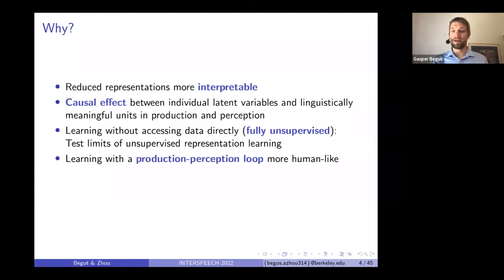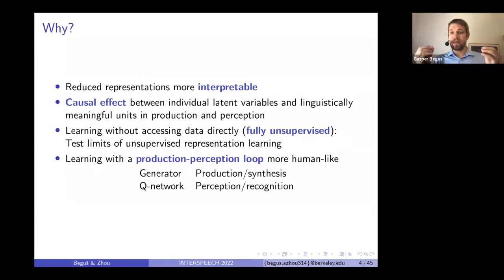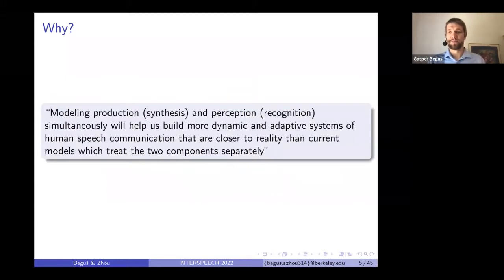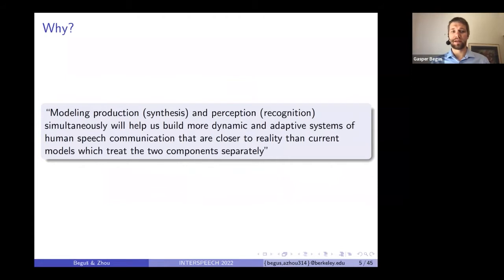We know that humans acquire speech by both perceiving it and also producing it. In fact, production and perception mutually influence each other. If we're modeling the two separately, we're actually missing an important part of human speech acquisition, which is the mutual influence between production and perception. In sum, we're modeling production and perception simultaneously, which will hopefully help us build more dynamic and adaptive systems of human speech communication closer to reality than current models.